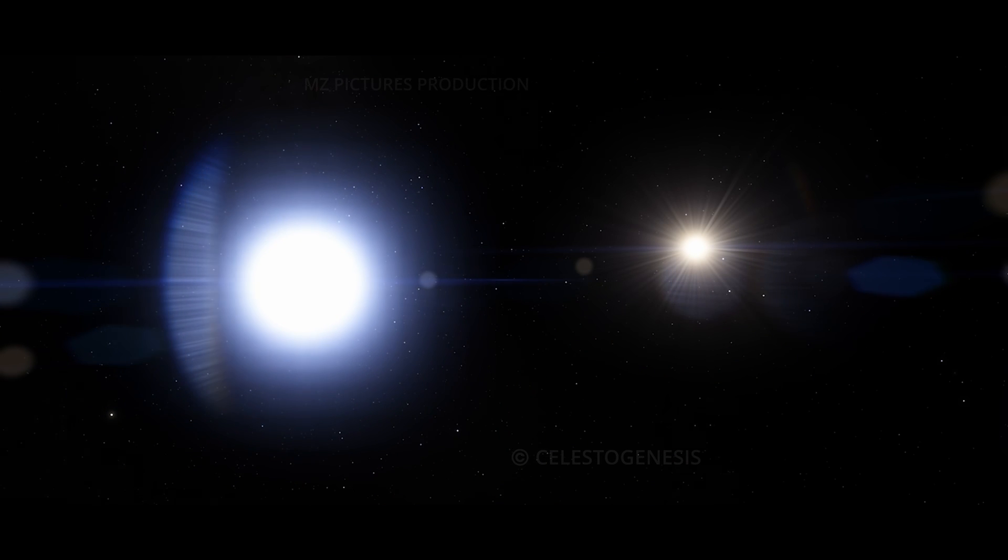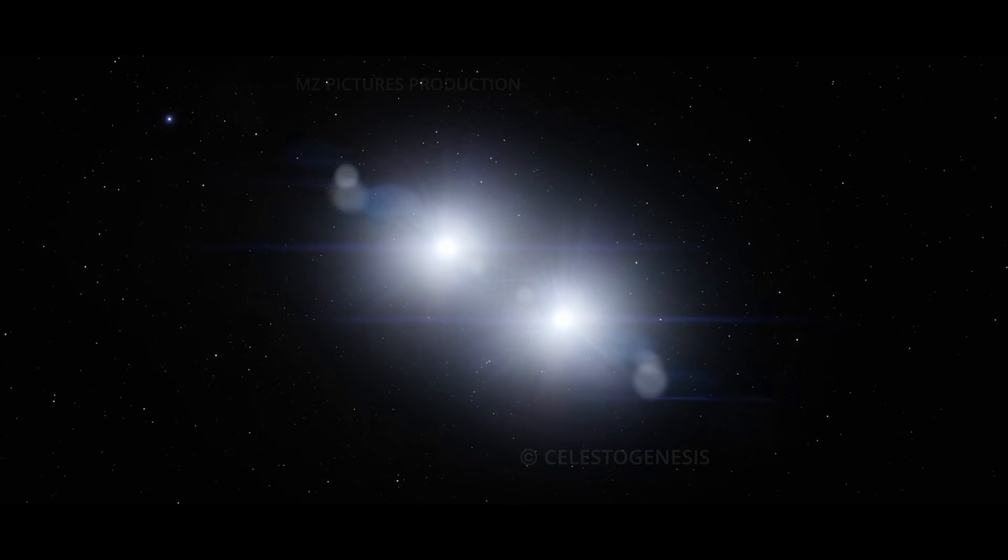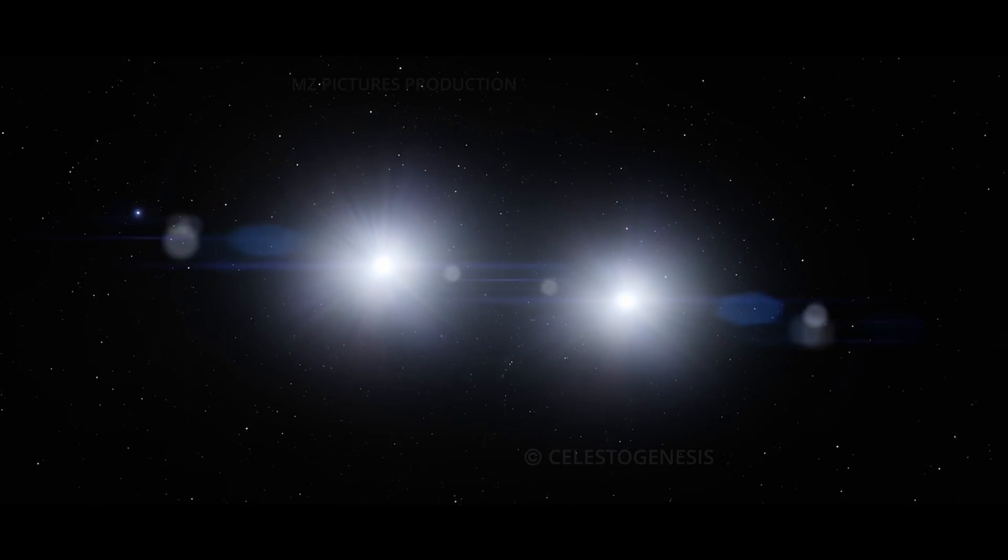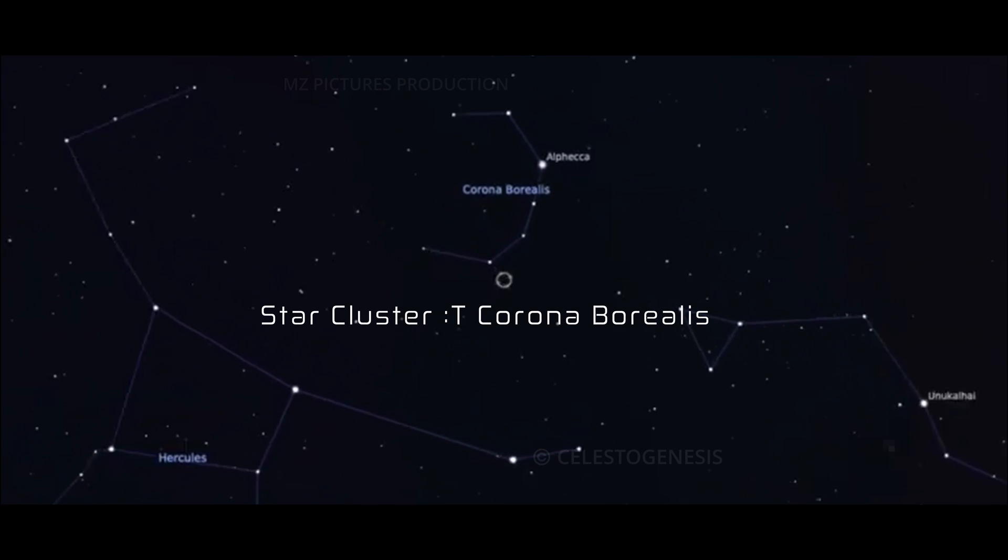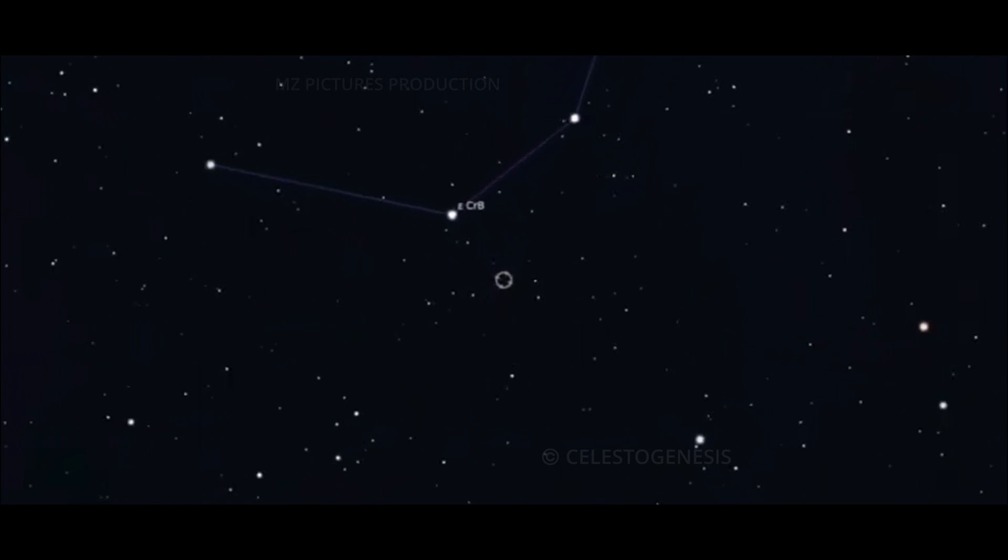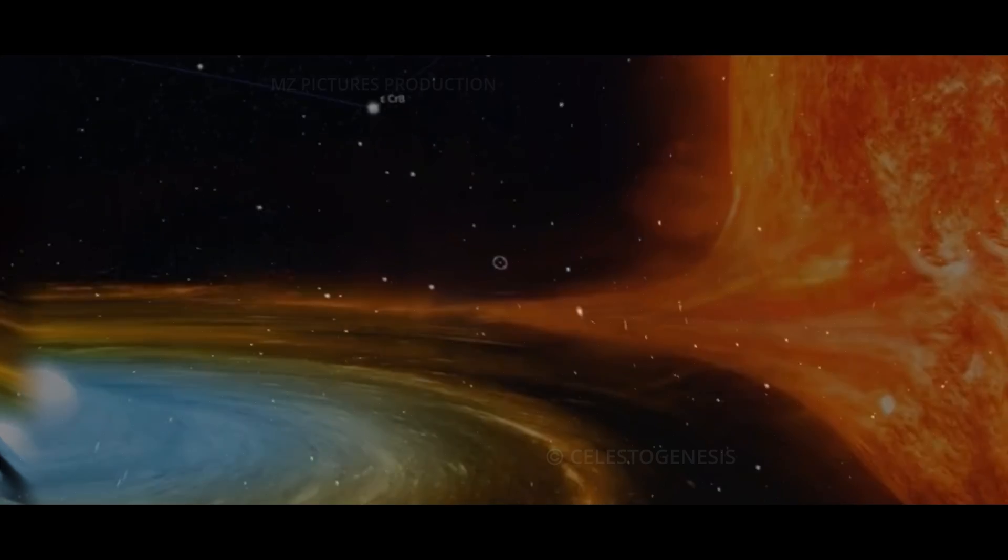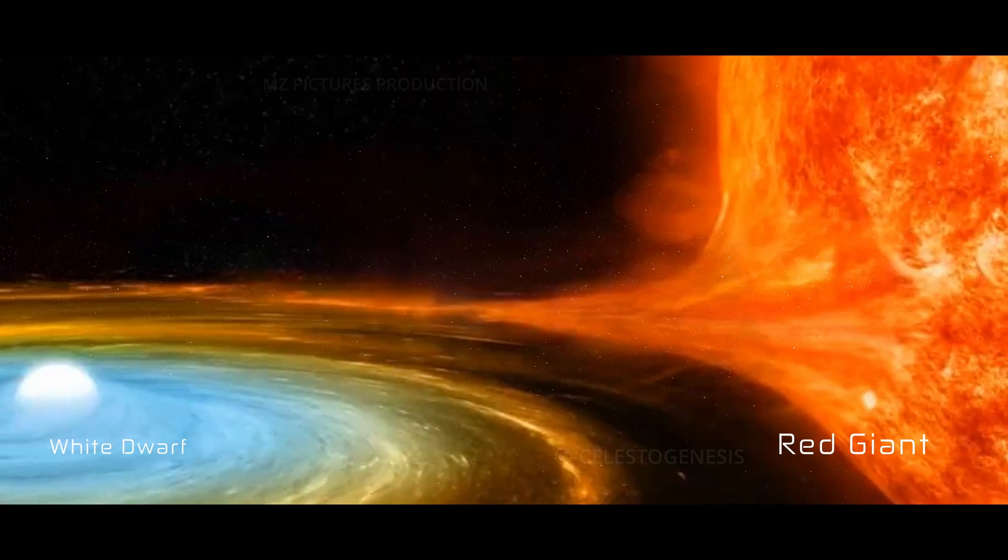These twin stars, bound by their mutual gravitational pull, dance around each other in a cosmic ballet. One such pair is located in the star cluster T Corona Borealis, a staggering 3,000 light-years away. This binary star system is home to an Earth-sized white dwarf and a sun-sized red giant star.